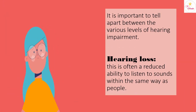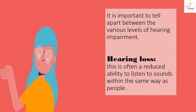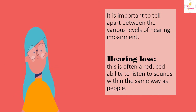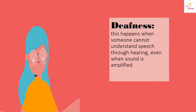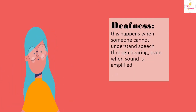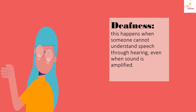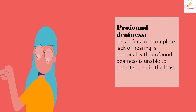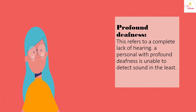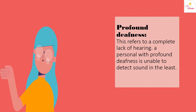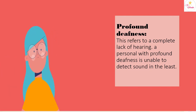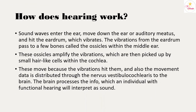It is important to distinguish between the various levels of hearing impairment. Hearing loss is a reduced ability to hear sounds in the same way as other people. Deafness occurs when someone cannot understand speech through hearing even when sound is amplified. Profound deafness refers to a complete lack of hearing — a person with profound deafness is unable to detect any sound at all.